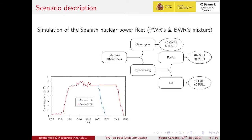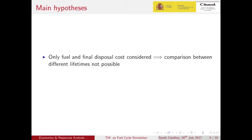Starting with the basic scenario of a 40-year lifetime, an extension of 20 years is considered. Each scenario could be an open cycle or include reprocessing, which is divided into partial reprocessing — where only the material that is going to be consumed is separated — or full reprocessing, where all the material is separated. Only the fuel and the final disposal costs are considered so that different strategies could be compared.